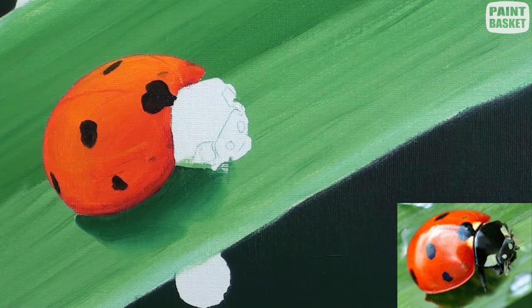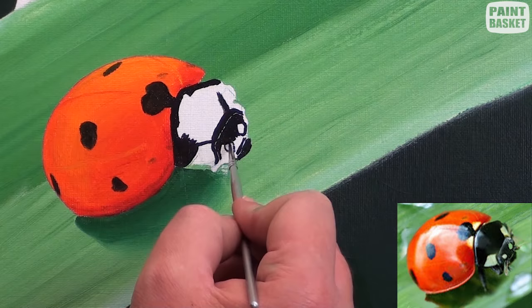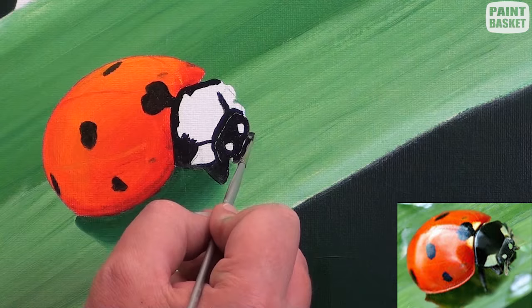For the face we can block that in also with the lamp black. What I want you to notice is that super thin little line that I've left between the face and the nose, so that I don't lose where that line is. At this stage we're not going to worry about the shadings. That will come later.